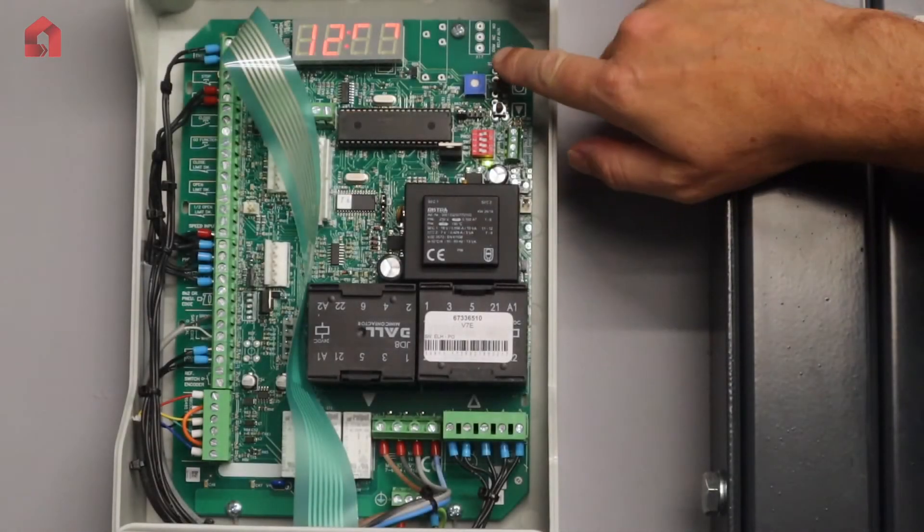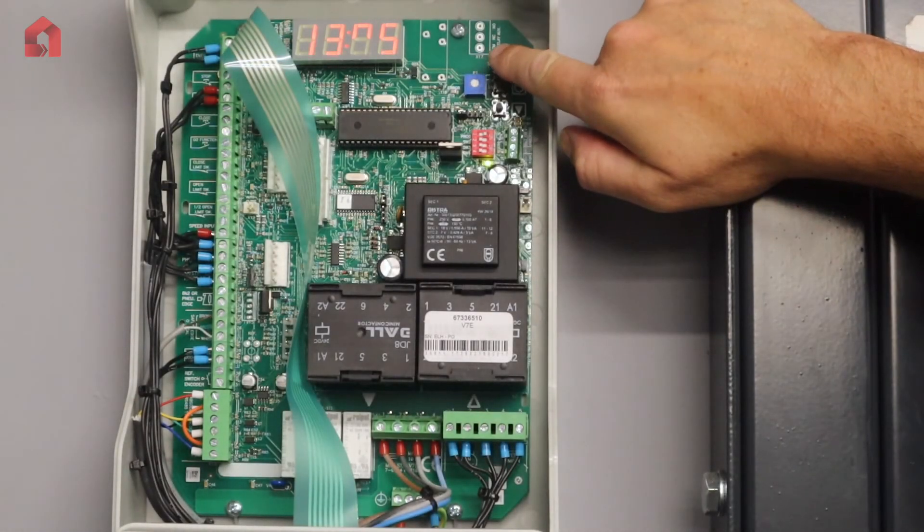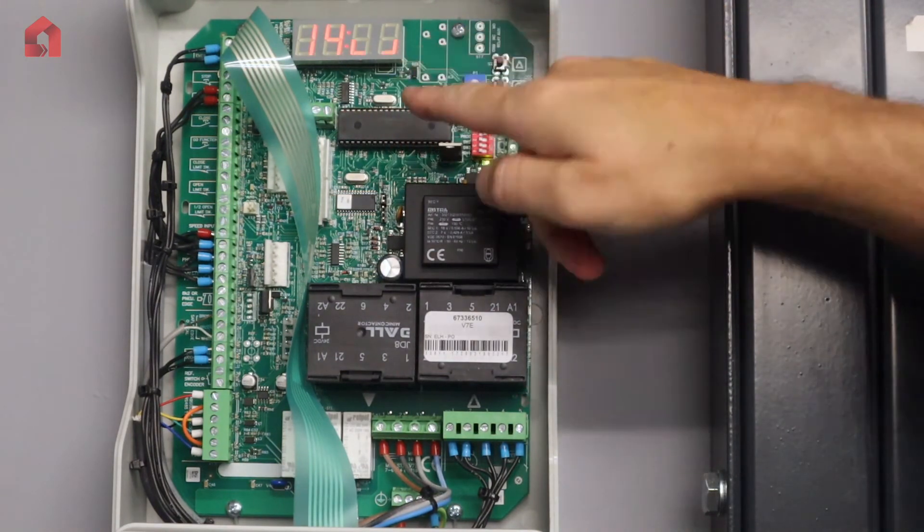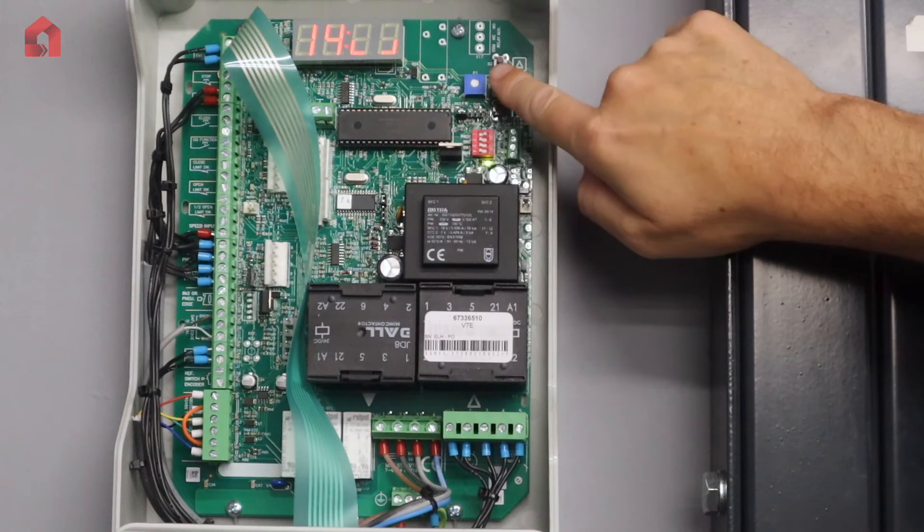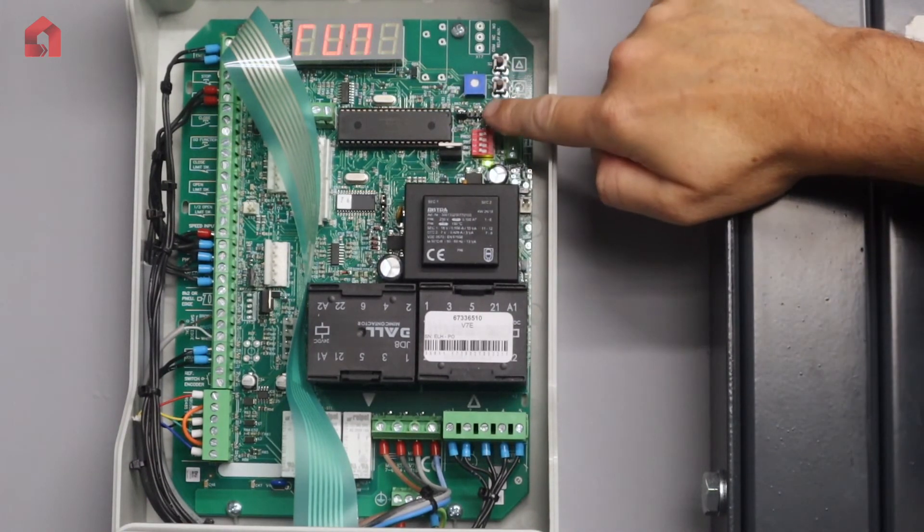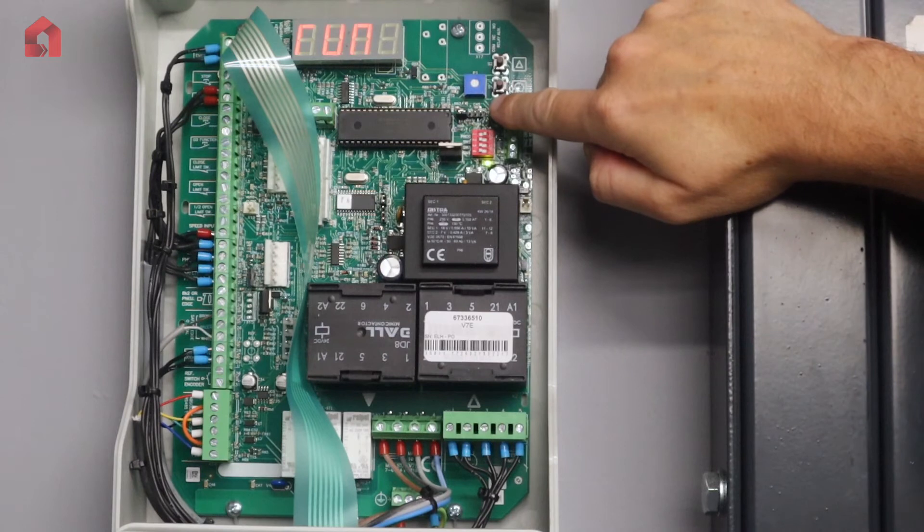So to set the bottom limit, if you then scroll up to parameter 14, it shows your bottom limit there. Press your stop saying do you want to set your limit? Yes. Press the stop once more, it will say run. So you now run it down to where you want to set your bottom limit.